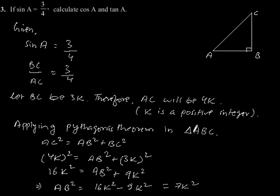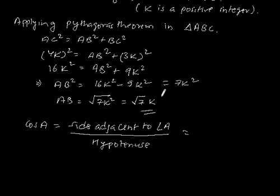And hypotenuse is AC, so root 7K by 4K. This is equal to root 7 by 4.